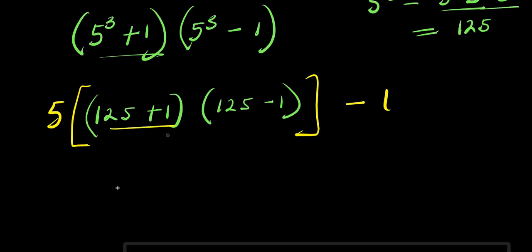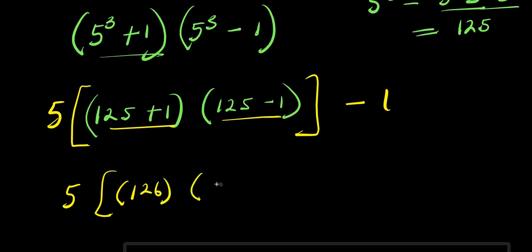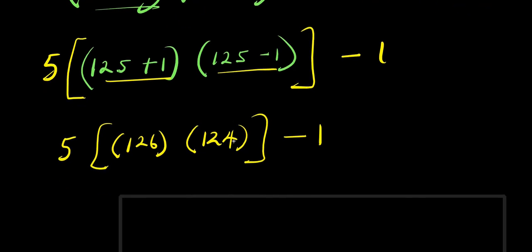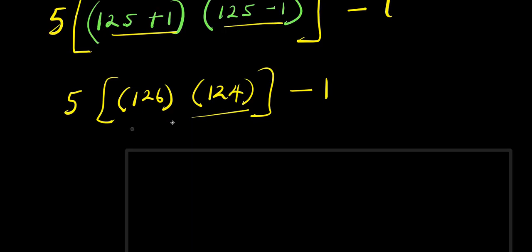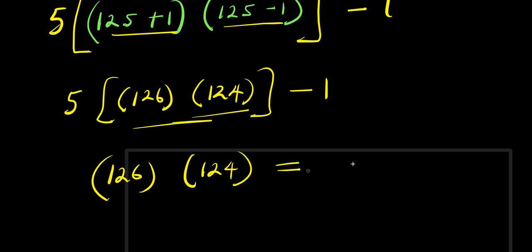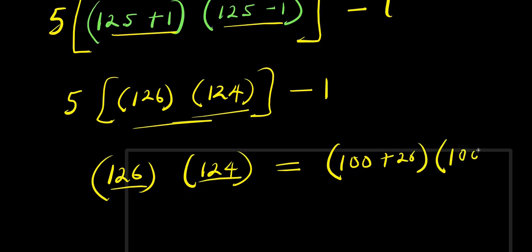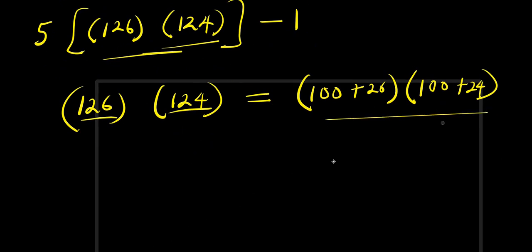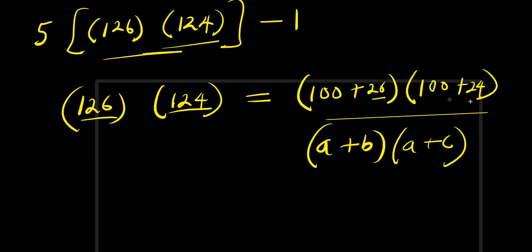Let's add up: 125 plus 1 gives 126, and 125 minus 1 gives 124. So we have 5 times 126 times 124 minus 1. We can express 126 as 100 plus 26 and 124 as 100 plus 24. So this is now in the form of a plus b times a plus c, where b is 26 and c is 24.